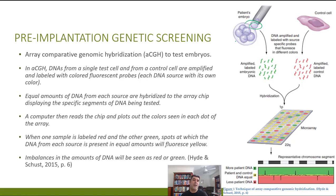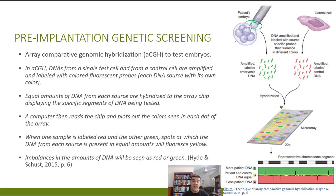The process of pre-implantation genetic screening doesn't require a lot of detail, but basically we use a technique called Array Comparative Genomic Hybridization, simplified into the acronym ACGH. We take DNA from our patient and DNA from a control cell, amplify them, and mark them with different colors. We then produce an array — a large number of different pieces of DNA — and we can map the entire genome from chromosome 1 through to chromosome 22 plus the X and/or Y chromosomes.